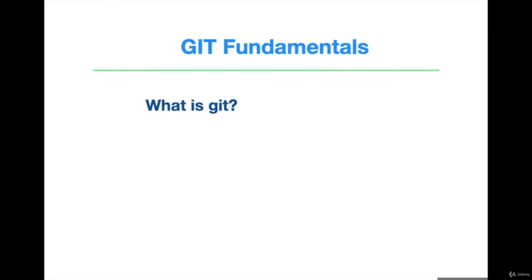What is Git? Git is a free and open source version control system. It is most widely used by the developer community. A version control system is a way to track code changes or any documentation while developing software by various stakeholders.